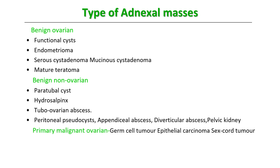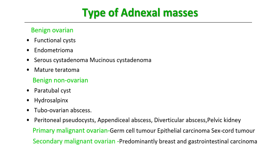There can also be primary malignant ovarian tumors like germ cell, epithelial, and sex cord tumors, as well as secondary malignant ovarian tumors — predominantly where the primary site is breast or gastrointestinal carcinomas. When talking about malignant or benign ovarian tumors, there is a whole chart of classification. In subsequent videos we would present the entire classification.